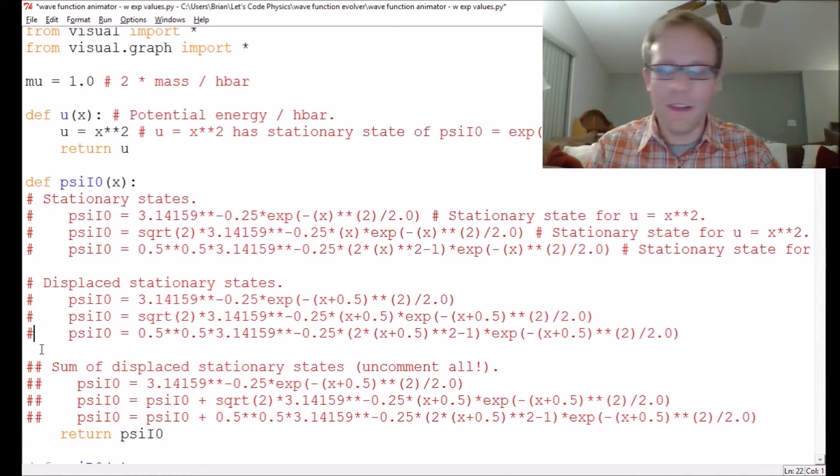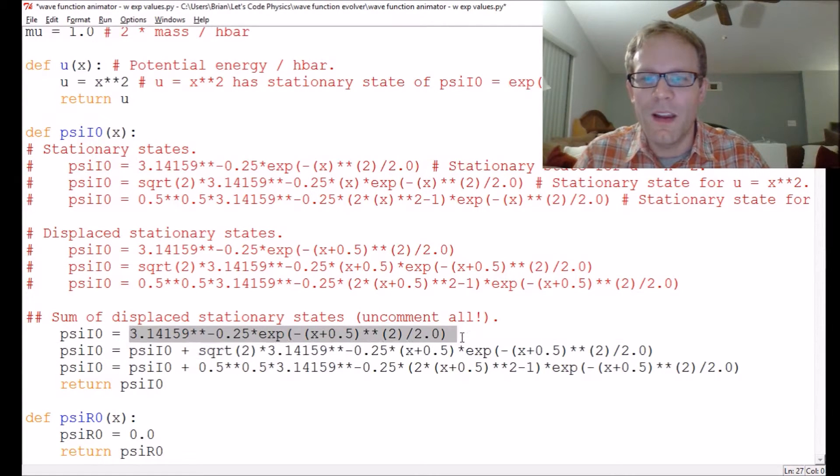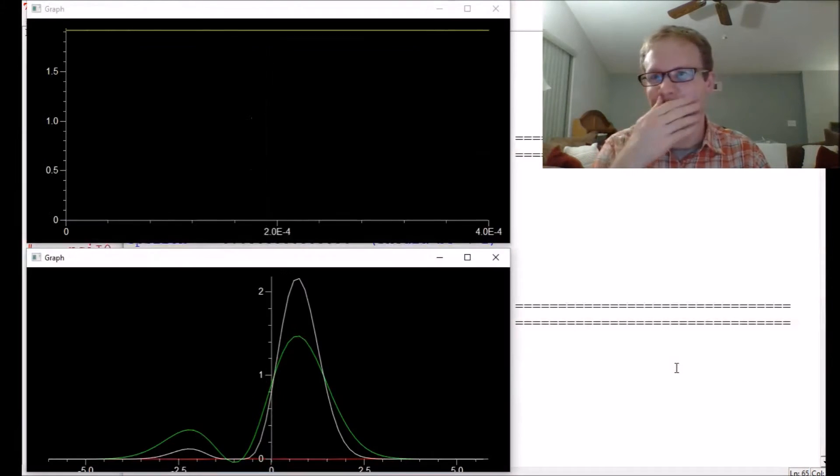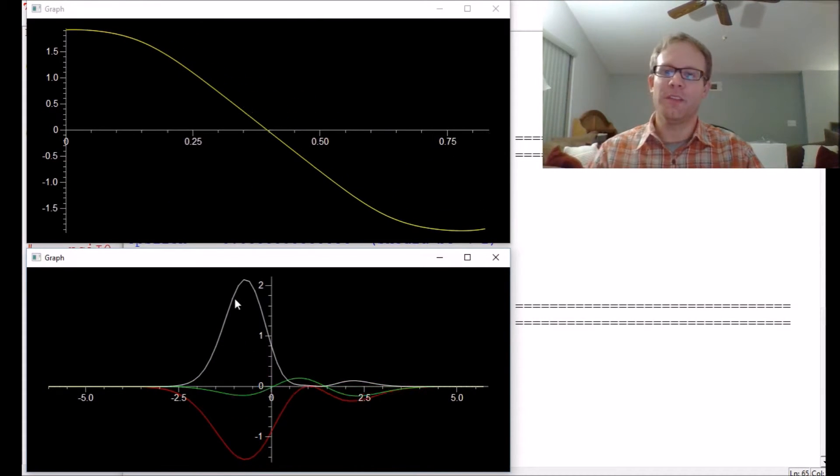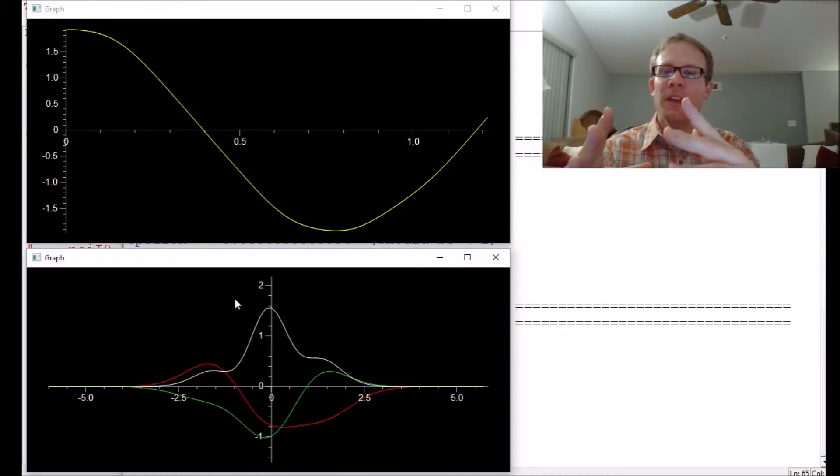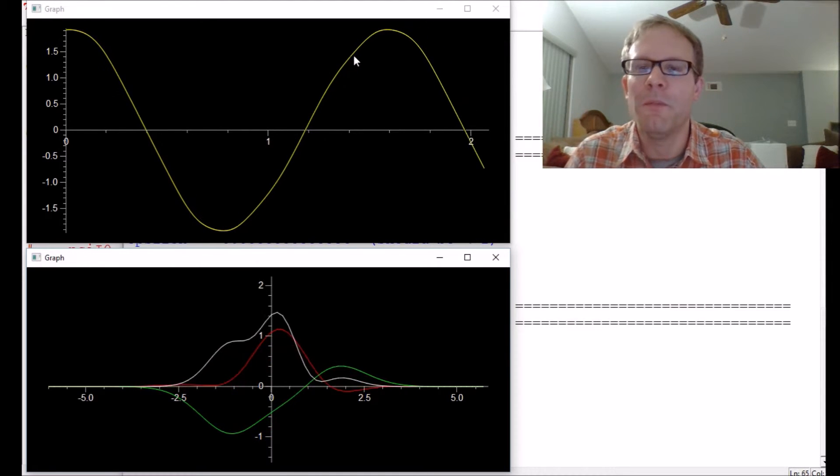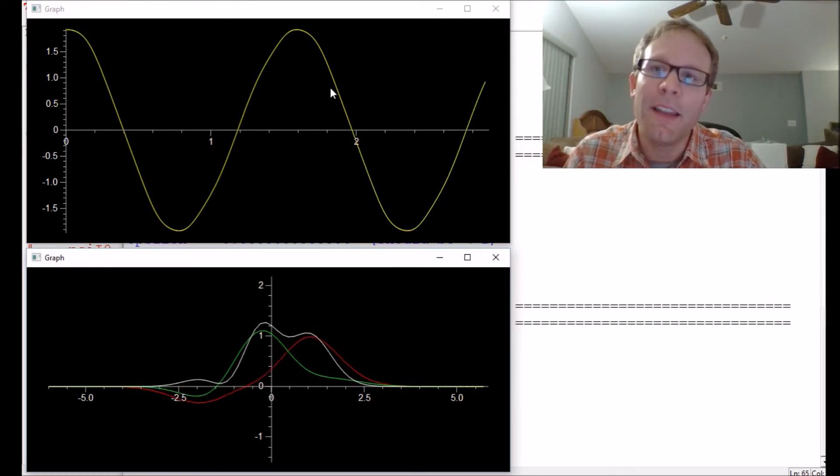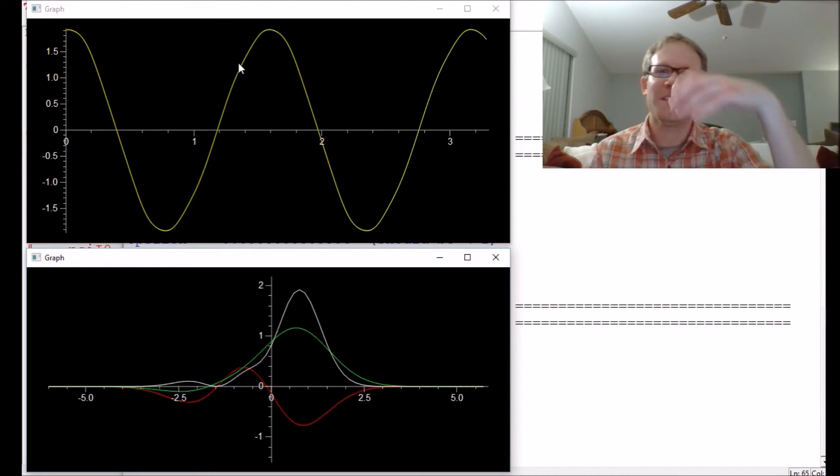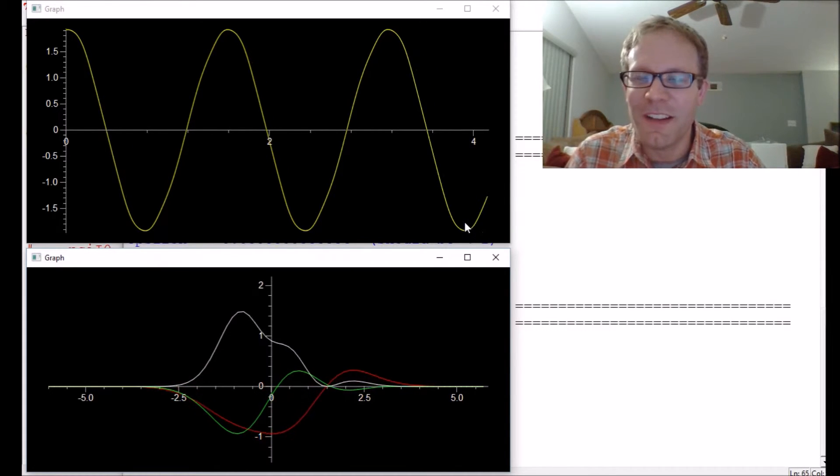Let's take a look at what happens if we put in our sum of displaced stationary states. We're going to uncomment all these - this is adding that first displaced stationary state plus the second one plus the third one. So we're mixing three different energy levels here. We got this complicated behavior where the weight is kind of shifting back and forth. There's a lot of probability to the left right now, then some probability moves to the middle, then most of the probability moves to the right. That's reflecting the expectation value. The expectation value is moving from positive x through zero down to negative x. It's kind of cosine-like.